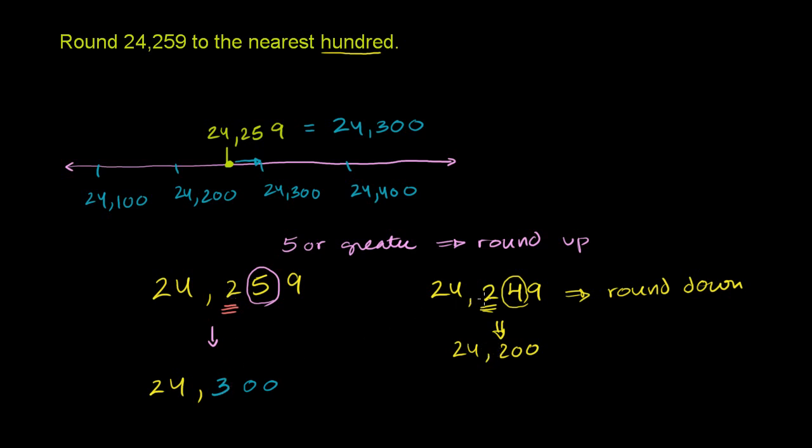And it makes sense. 24,249 is going to be sitting right over here someplace. So it's going to be closer to 24,200. 24,200 would be the nearest hundred when we round down. In this case, for the case of the problem, 24,259, the nearest hundred is 24,300. We round up.